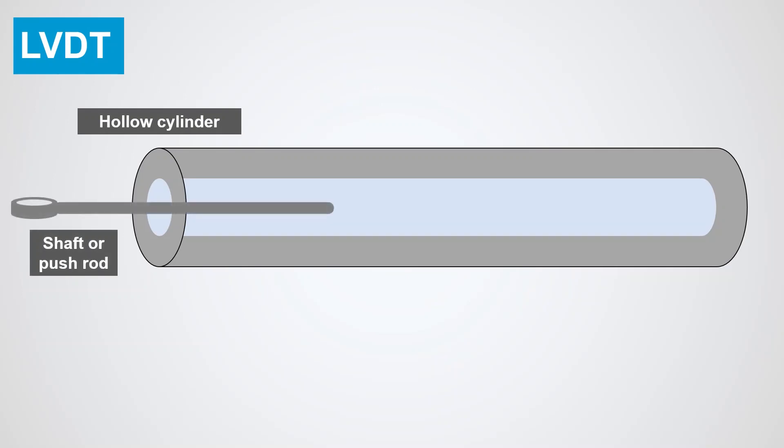An LVDT consists of a hollow cylinder with a shaft or push rod that moves freely back and forth inside the hollow cylinder. The push rod is connected to a magnetically conducted core.